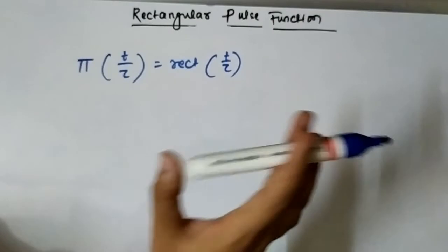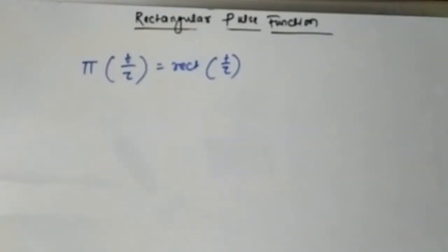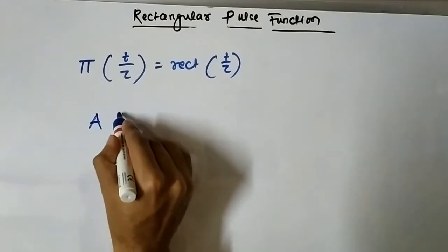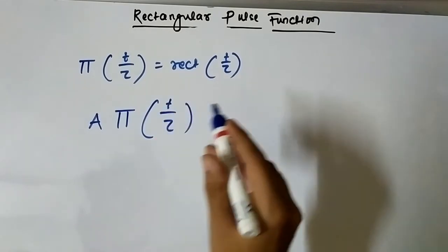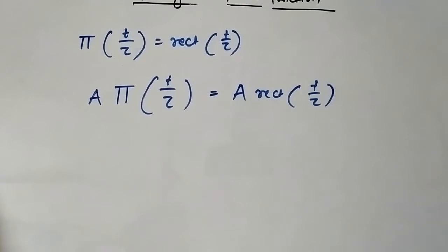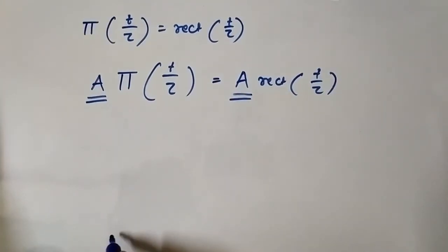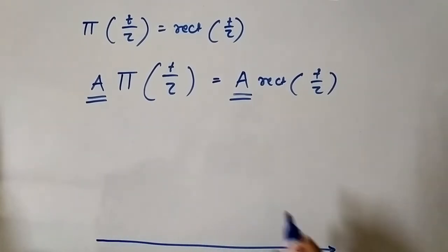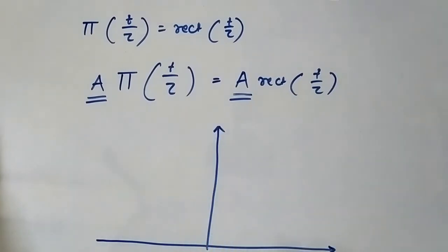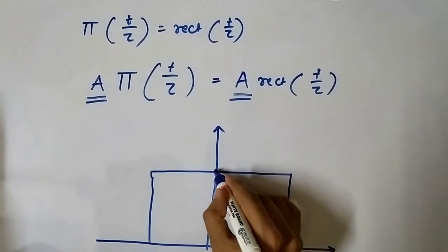There can be another type of rectangular pulse function where the constant amplitude is not equal to unity — it can be some other constant value. Those pulse functions are represented as a·pi(t/tau) or a·rect(t/tau). In those cases, the constant value is equal to a. Such rectangular pulse functions look like this: this is the time axis, this is the amplitude axis, this is tau by 2, this is minus tau by 2, and from minus tau by 2 to tau by 2 the constant amplitude is equal to a.